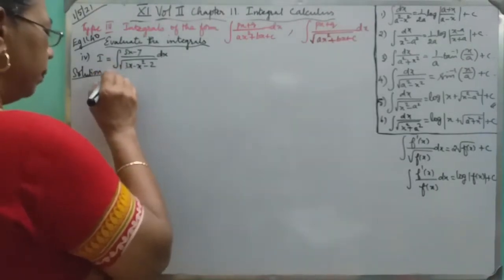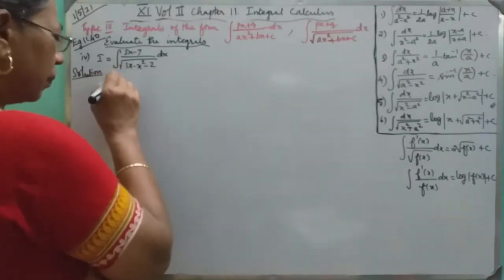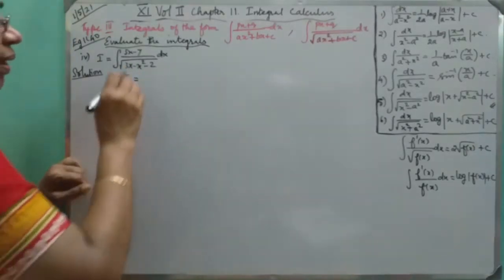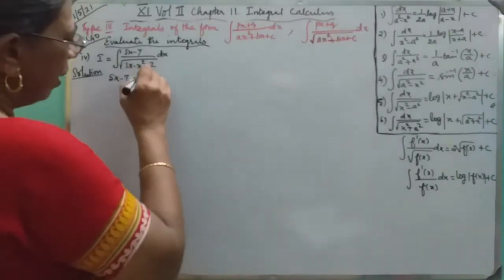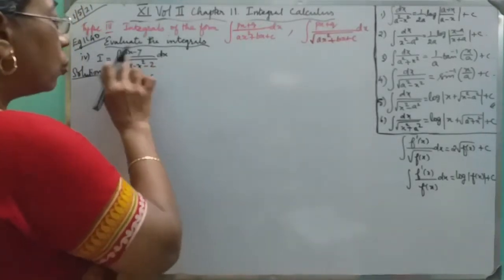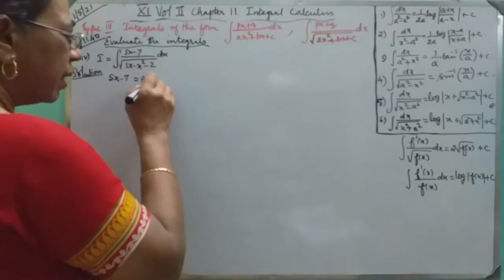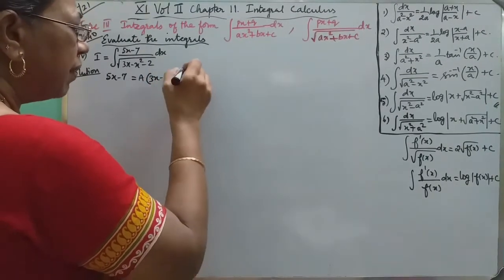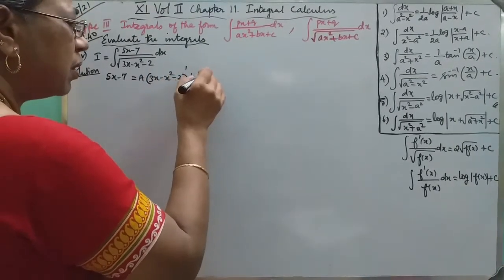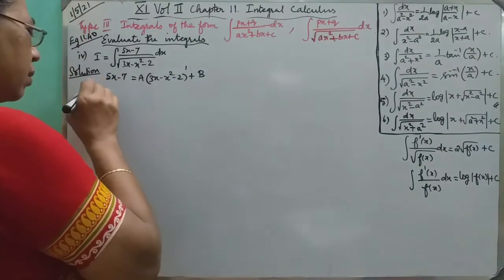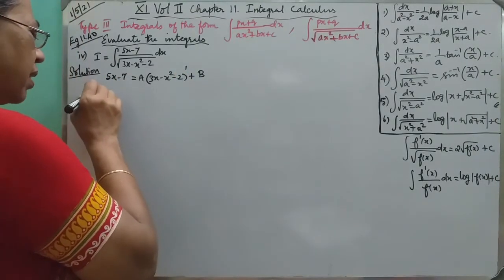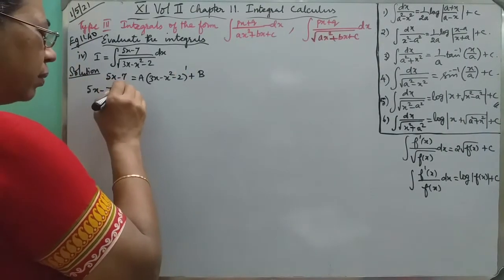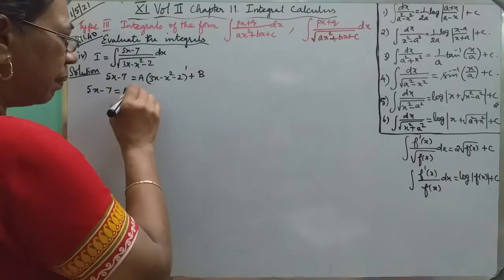The numerator of the expression is 5x minus 7. A into the root of the function is its derivative. The differentiation is the derivative. So 5x minus 7 is equal to a into the derivative.